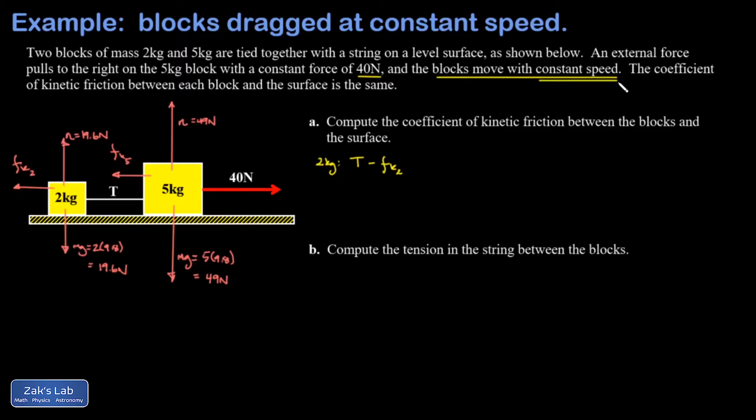The 5 kilogram block is a little more complicated. I have a 40 newton external force applied to the right, and then the tension in the string pulls to the left, so I have minus T. The friction force also points to the left, so minus fk5, and that's the net force and that must be equal to zero.